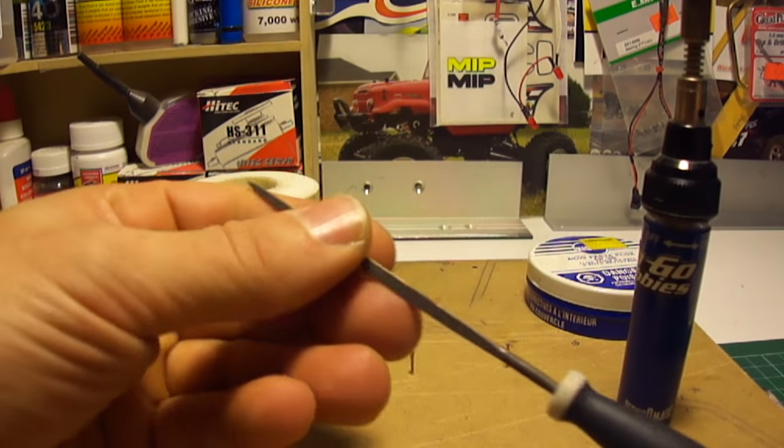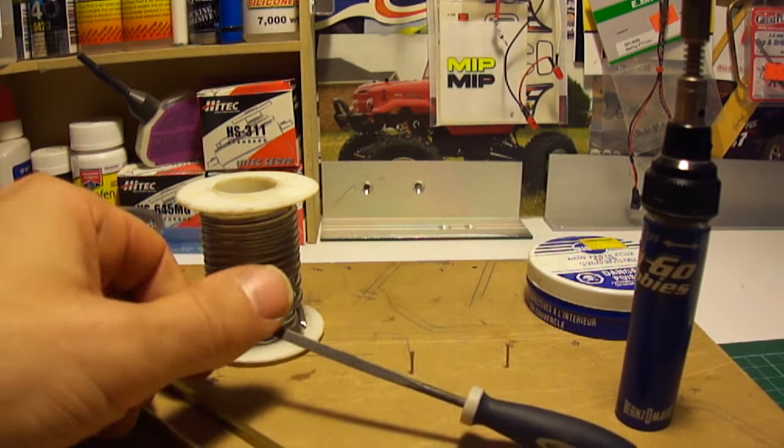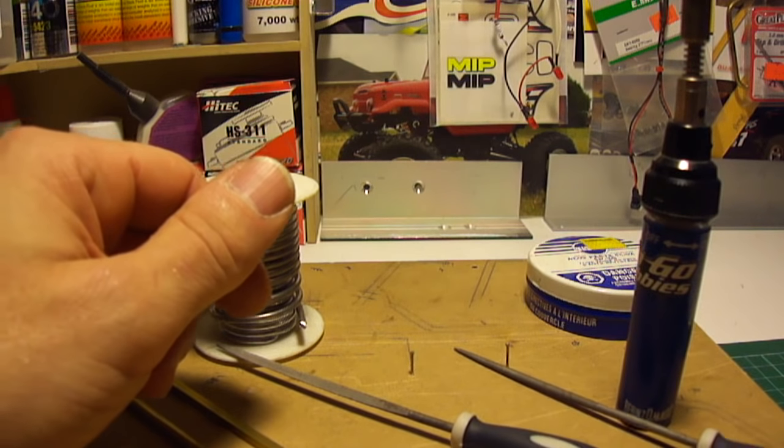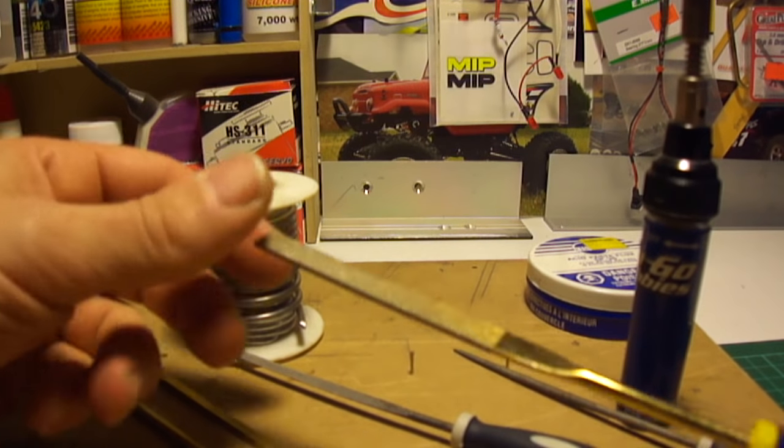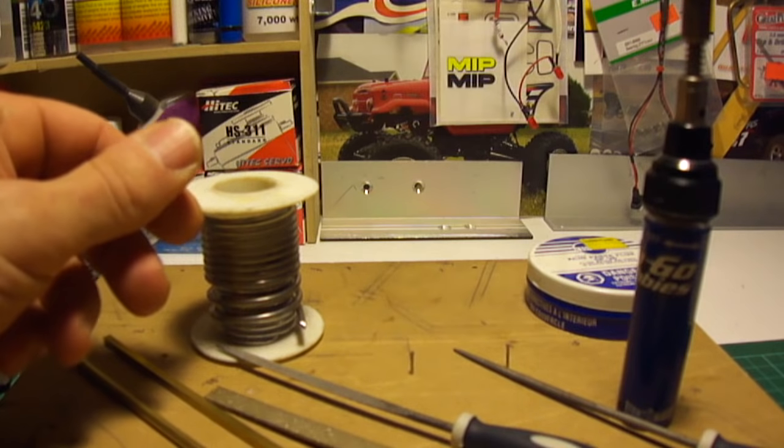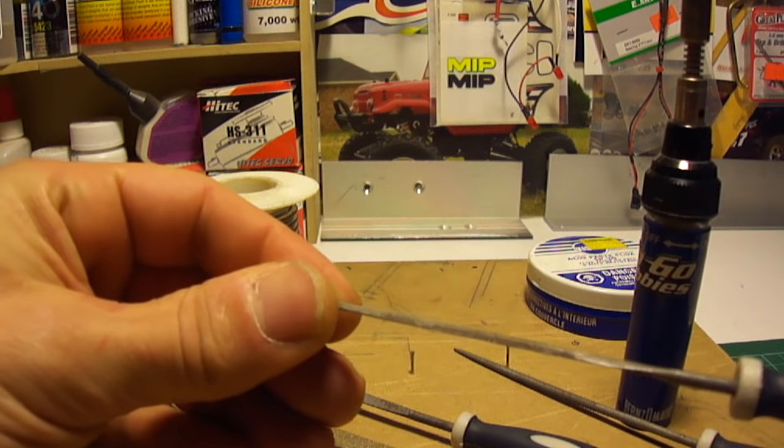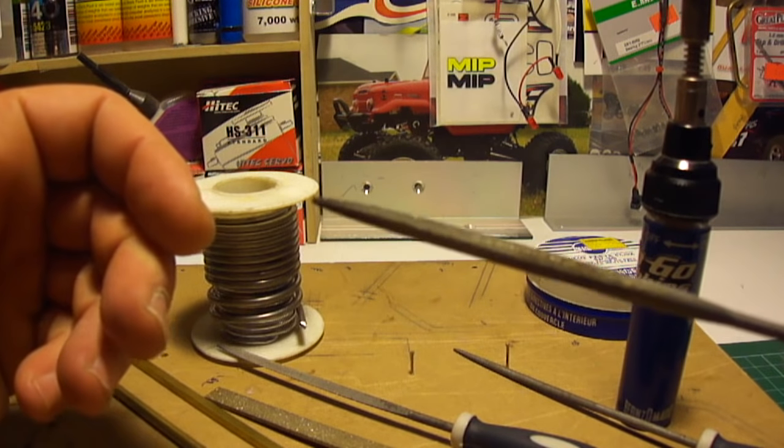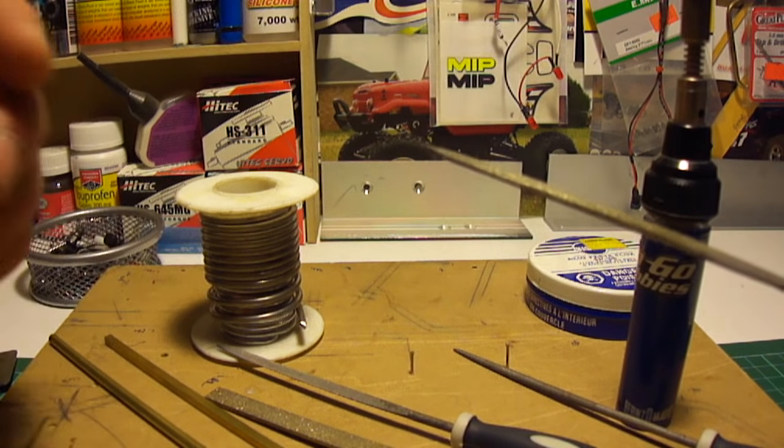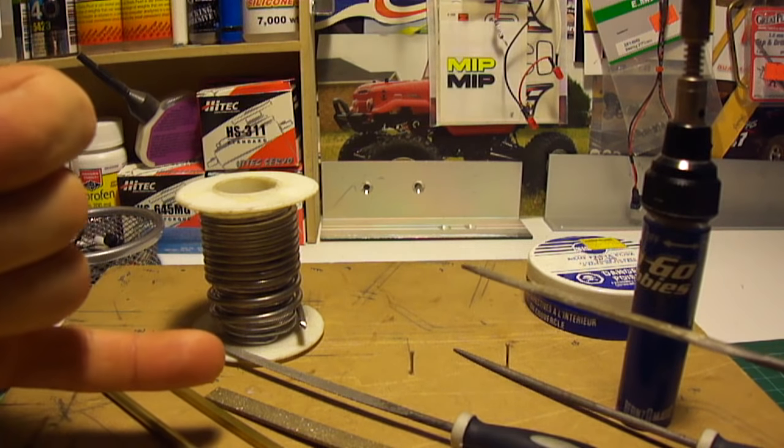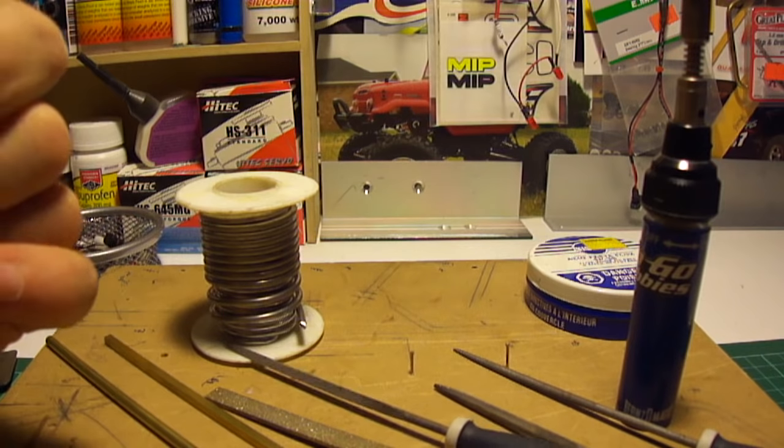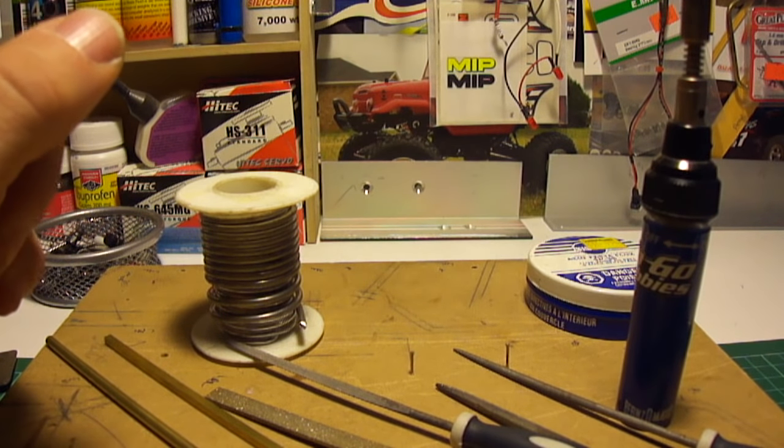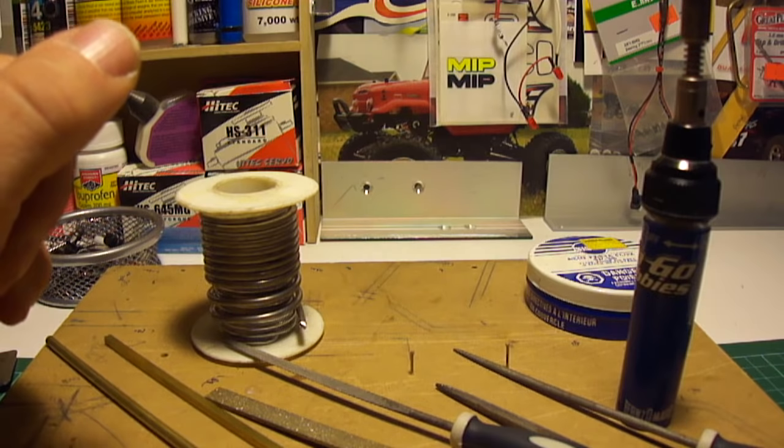Other stuff you're going to need, you're going to need some files. There's a 1/8 round file, flat file and the one I use the most here is a half round file. I use this one here mostly for coping 5/32 rod or even 1/8 rod to fit over top of the existing rod for a tight joint.